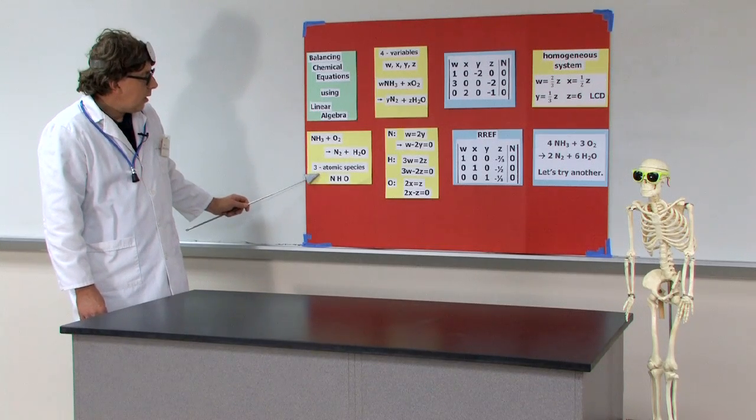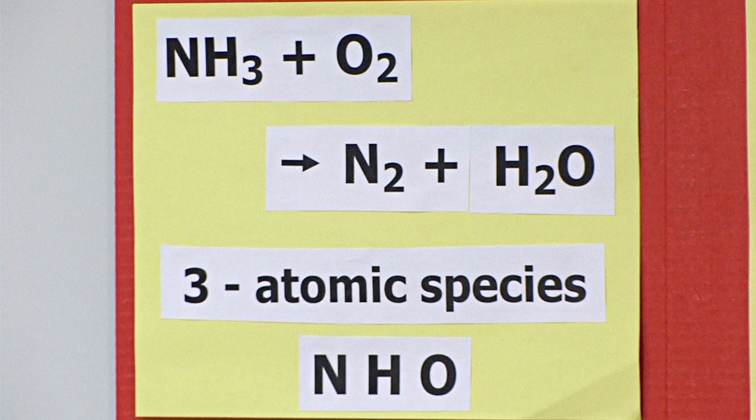So we have three atomic species here. We have N, nitrogen, H, hydrogen, and O, oxygen.